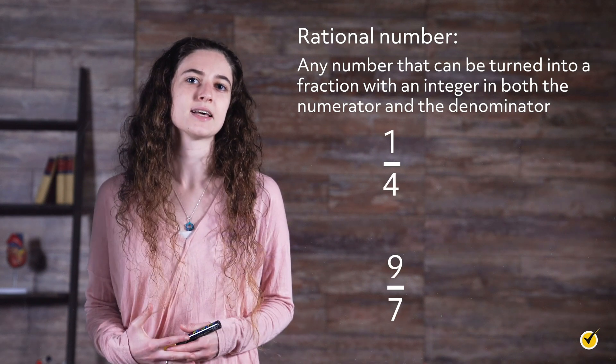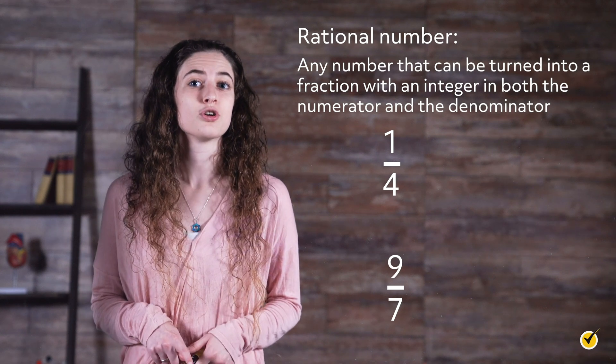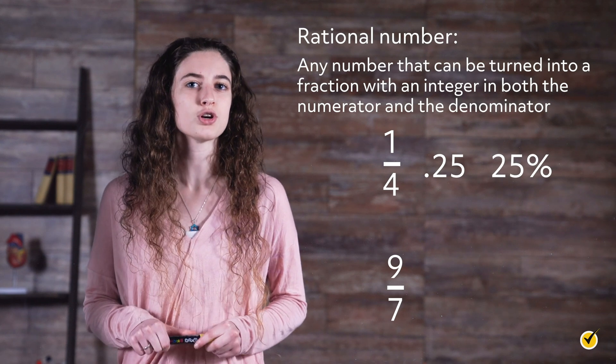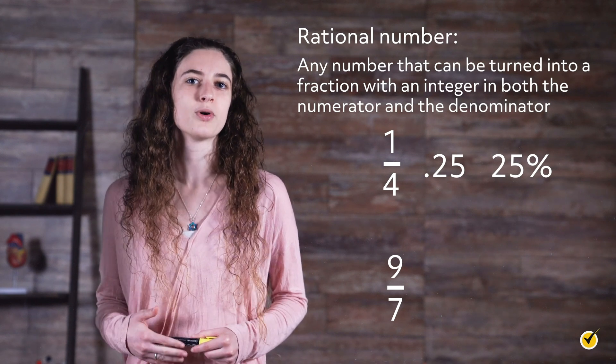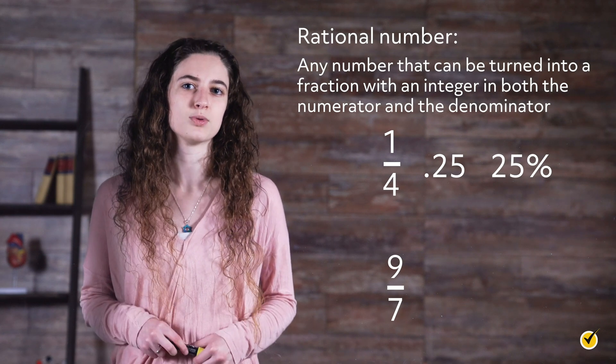One-fourth and nine-sevenths are examples of rational numbers. It's also important to note that 0.25 and 25% are also rational numbers because they are equivalent to one-fourth, and therefore can be turned into a fraction that divides two integers.